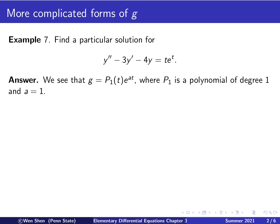Let's formally recognize the term g and its form. The term g here is a polynomial of degree 1 — the t — times an exponential function e^(at), where a equals 1. So p₁ is a polynomial of degree 1, and a is the rate for the exponential function.